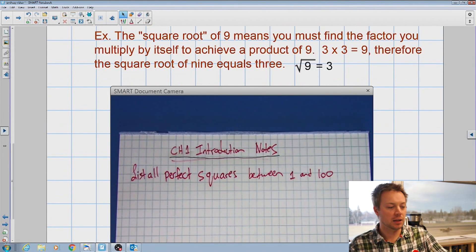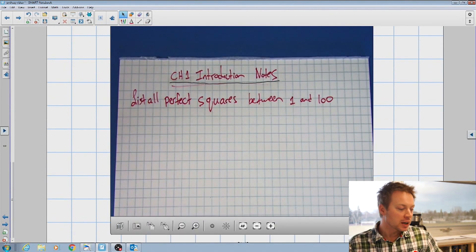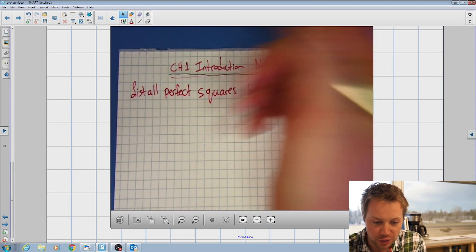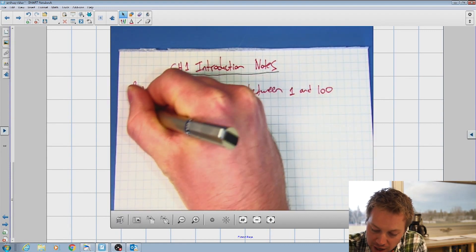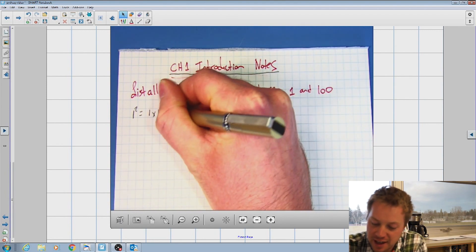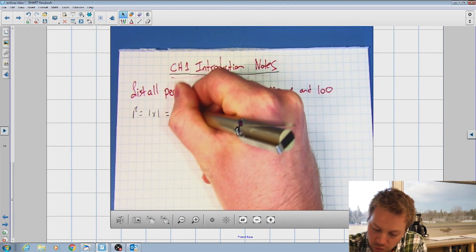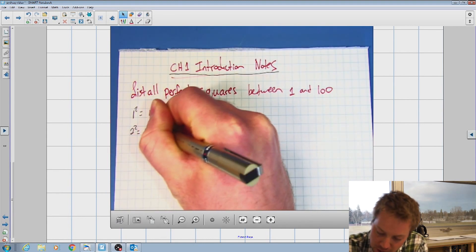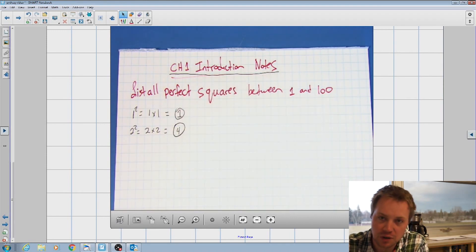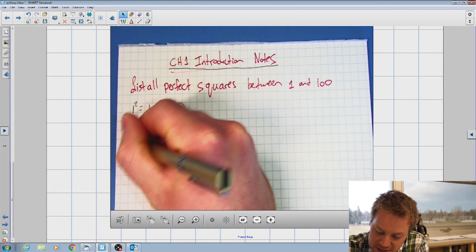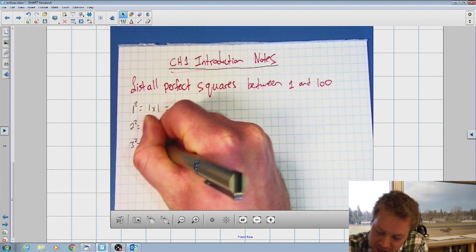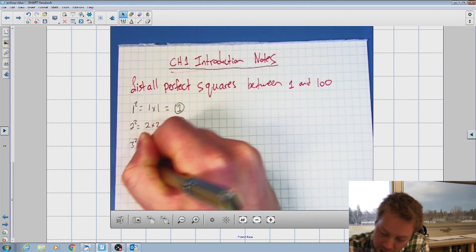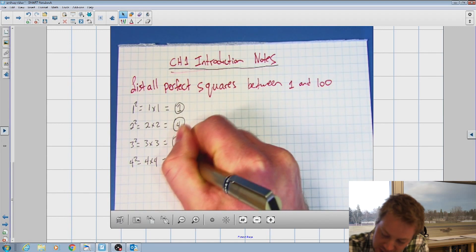So for a little bit more detail, I'm just going to do a few notes on paper here. We're going to list all of the perfect squares between one and 100. One squared equals one times one, that's equal to one. The next one is two squared, that's two times two, equals four. The next one is three squared, three times three equals nine. Next one is four squared, four times four equals 16.